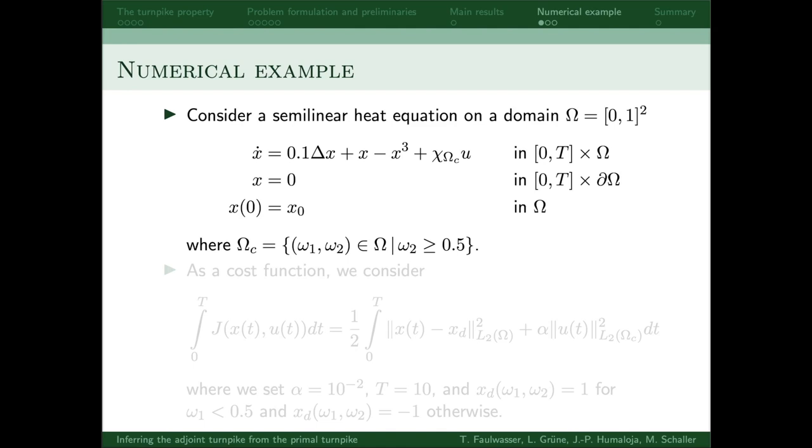Let's now move on to the numerical example. So we consider a semilinear heat equation on the unit square, where we have a diffusion term, reaction term, and a linear term on the state, and distributed control. The system is governed by homogeneous Dirichlet boundary conditions, and the control acts on the upper half of the square.